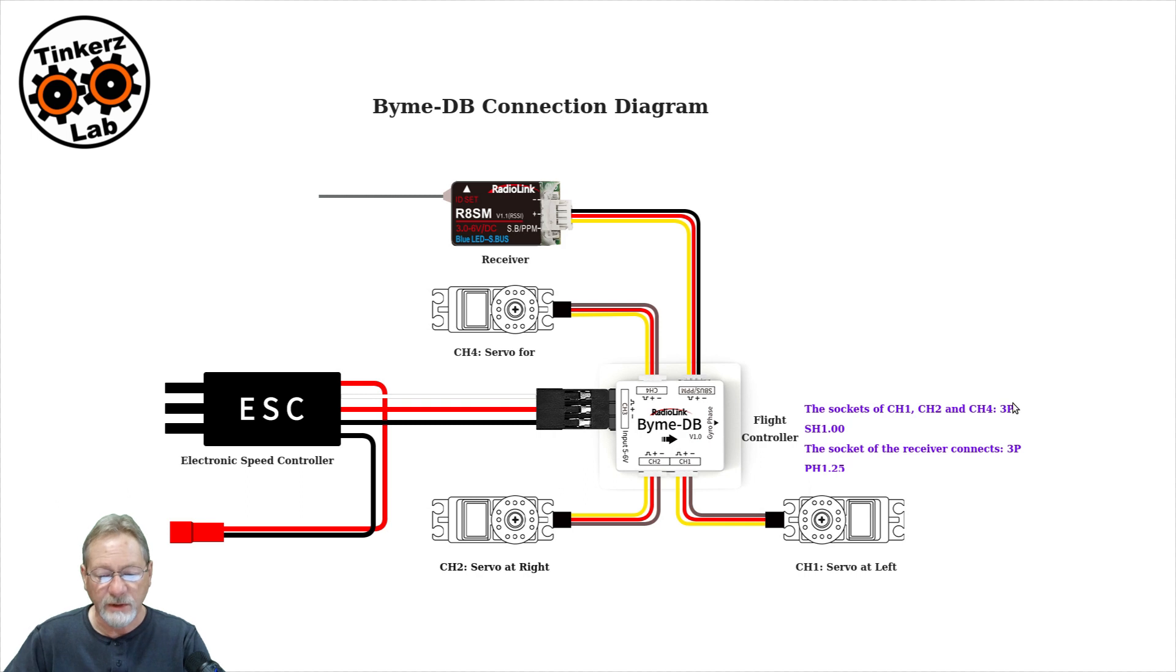It uses a three-pin SH 1.00 millimeter, which means that the center of the pins are offset one millimeter from each other. And then the socket for the S-Bus PPM receiver has a three-pin PH 1.25 millimeter, which means that the pins are 1.25 millimeter offset.